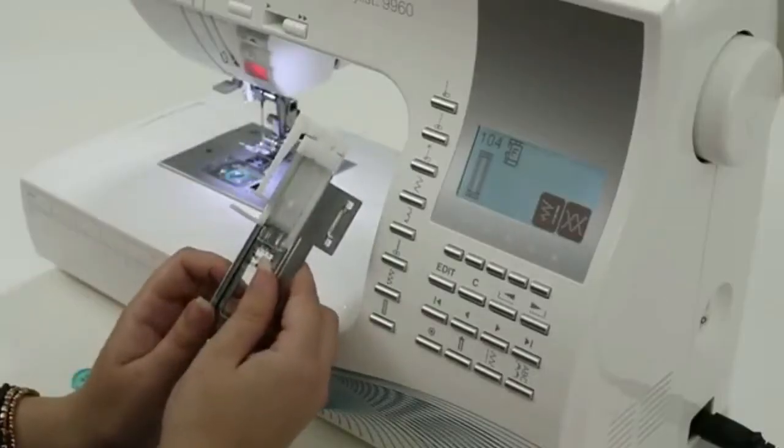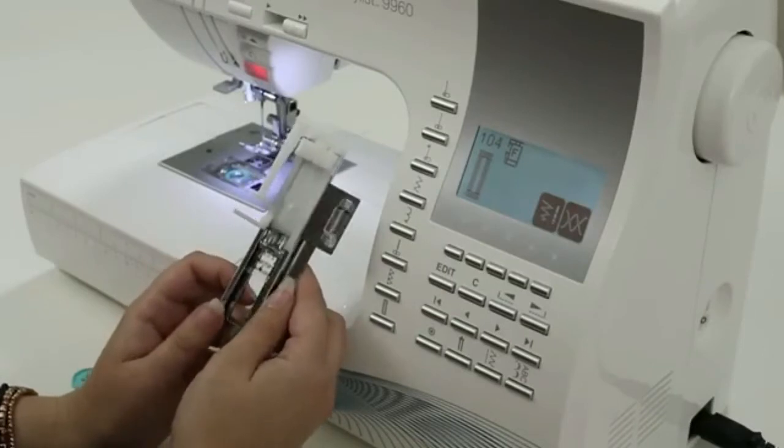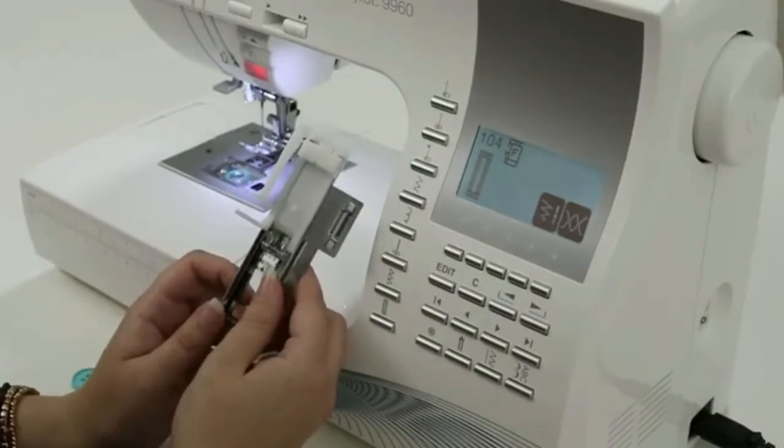Here's our buttonhole foot, and this particular buttonhole foot comes with an underplate, which sandwiches our fabric and helps prevent any slipping of the fabric.